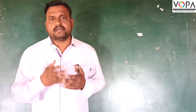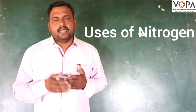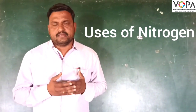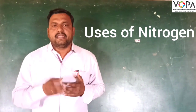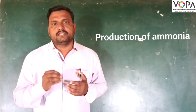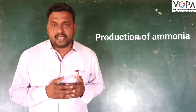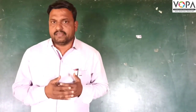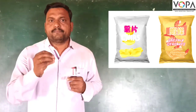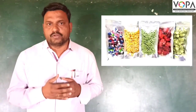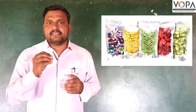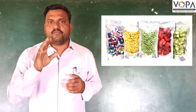First, we will see the use of nitrogen. Nitrogen is used in the production of ammonia as a fertilizer by adding it to the soil. It is also used to keep food fresh, so nitrogen is used in air-tight packing for food items.